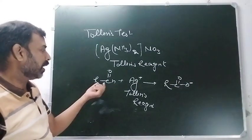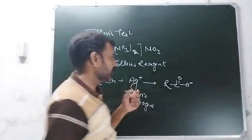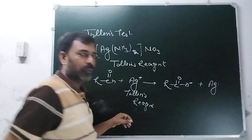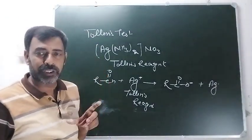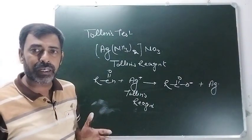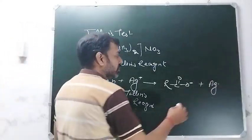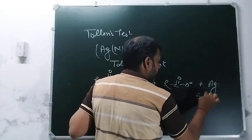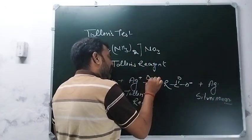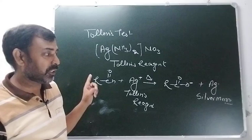अगर कोई aldehyde लेते हैं - RCH=O + Ag⁺ (ionic form में, Tollens reagent) - तो silver का reduction होगा और aldehyde का oxidation होगा। Aldehyde का oxidation होने पर carboxylic acid बनता है - हमने यहाँ carboxylate ions लिखे हैं: RCOO⁻। और Ag⁺ का reduction होने पर बनाएगा Ag (silver)। जब glass के test tube पर silver लग जाता है, तो silver की coating को हम कहते हैं silver mirror। This is the test for the identification of aldehydes।